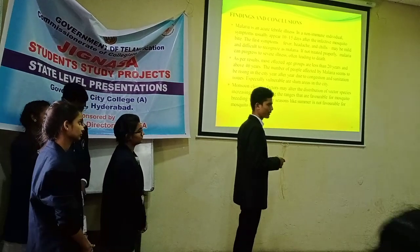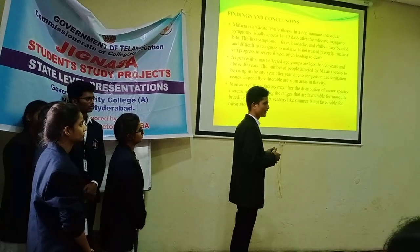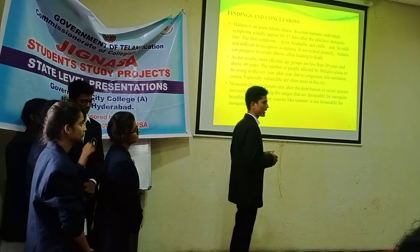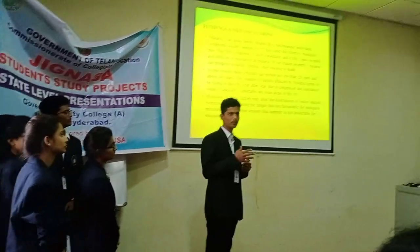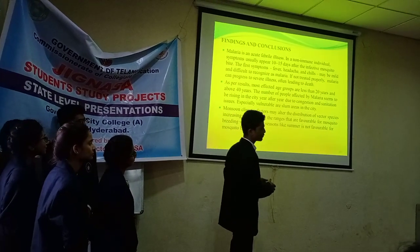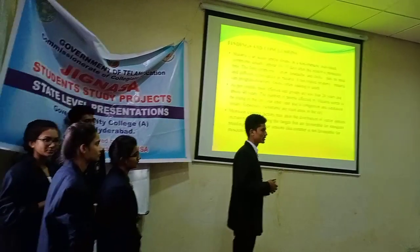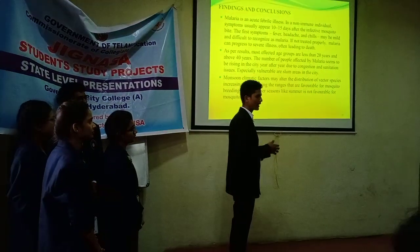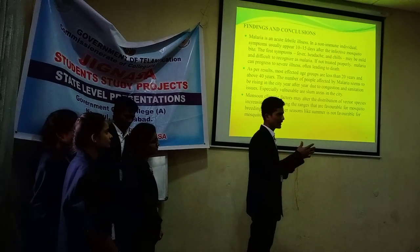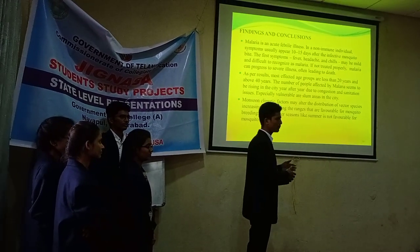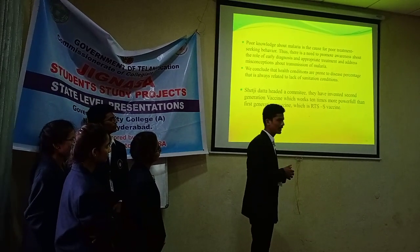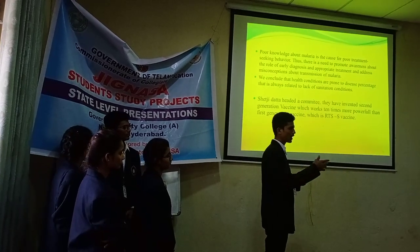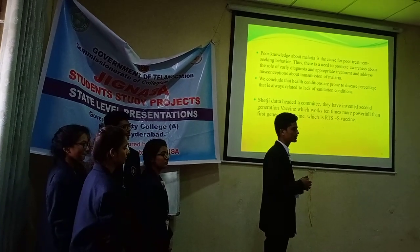Malaria is an acute febrile illness. In non-immune individuals, symptoms usually appear 10 to 15 days after an infected mosquito bite. Symptoms like fever, headache, chills, and nausea are difficult to recognize as malaria. If not treated properly, it can lead to severe illness and may cause death. According to our results, the most affected age groups are below 20 years and above 40 years. The number of people affected by malaria is rising year after year due to congestion, overcrowding, and sanitation problems. The climatic factor of monsoon plays an important role in spreading malaria, whereas summer is not favorable for its spread. Poor knowledge about malaria leads to poor treatment-seeking behavior, so we need to promote awareness about early diagnosis, appropriate treatment, and address misconceptions about malaria.